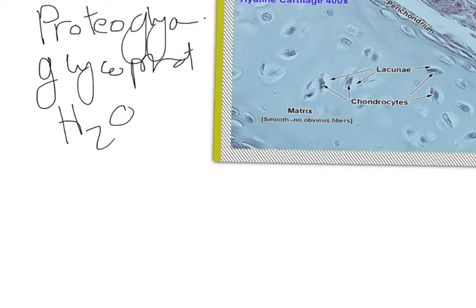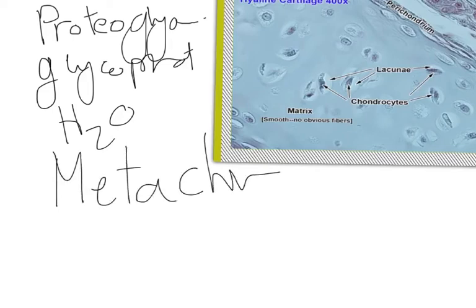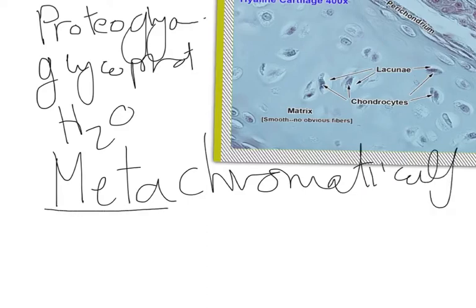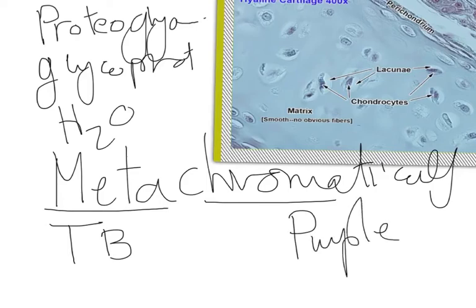Metachromatically. What is the meaning? Meta means another, chroma is the color. So when we apply a basophilic stain like toluidine blue on this matrix, instead of having the blue color, we have a new color which is the purple color, which is a feature known as metachromatic stain.